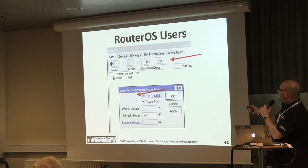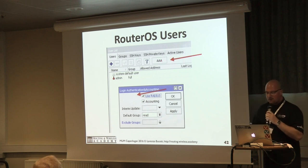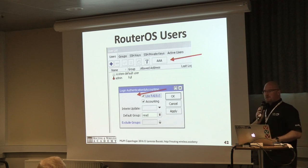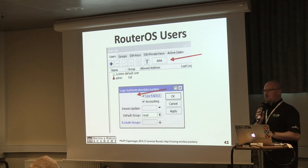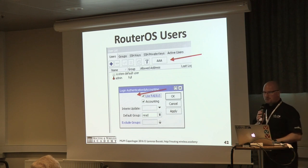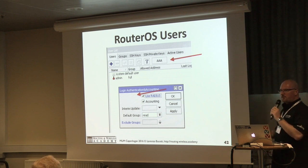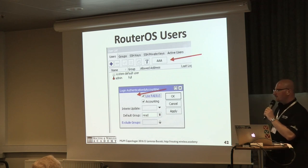To enable RouterOS user authentication via RADIUS, go to Users, click the AAA button, and enable Use Radius. This is a great implementation for anyone managing a network: put only physical emergency accounts locally on the routers, and have all other technicians authenticated by RADIUS. If you ever need to remove an employee's access, just close their account in the RADIUS server. If you need to change a technician's password, just change it in the RADIUS server — that's it.